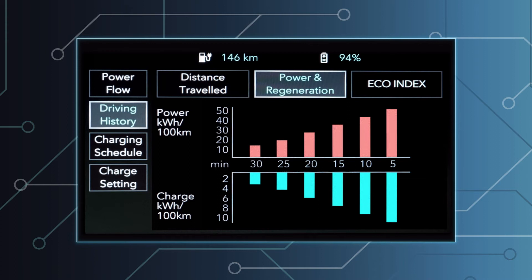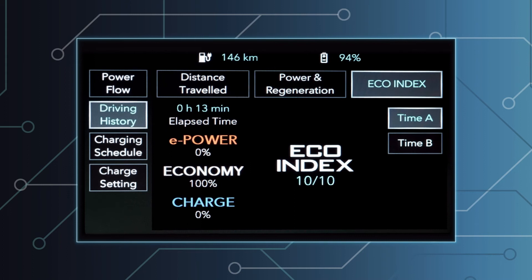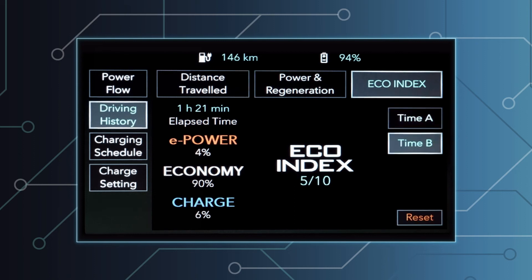Under power and regeneration, two graphs show the power used and regenerated in the last 30 minutes, with details every five minutes. In the eco index section, you can check your eco index and monitor the percentage of time spent in each mode. Time values A are the result of average values from key-on to key-off and are reset whenever the vehicle is turned on. Time values B provide information on driving behavior over the whole day or depending on when the measurement was reset, and must be reset manually using the reset button.